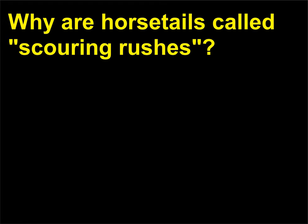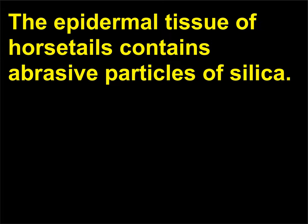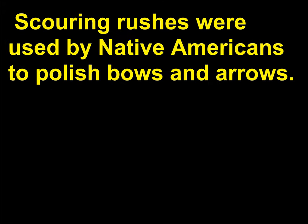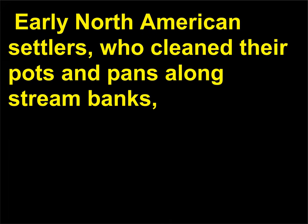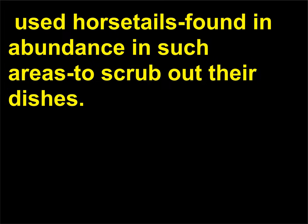Why are horsetails called scouring rushes? The epidermal tissue of horsetails contains abrasive particles of silica. Scouring rushes were used by Native Americans to polish bows and arrows. Early North American settlers, who cleaned their pots and pans along stream banks, used horsetails found in abundance in such areas to scrub out their dishes.